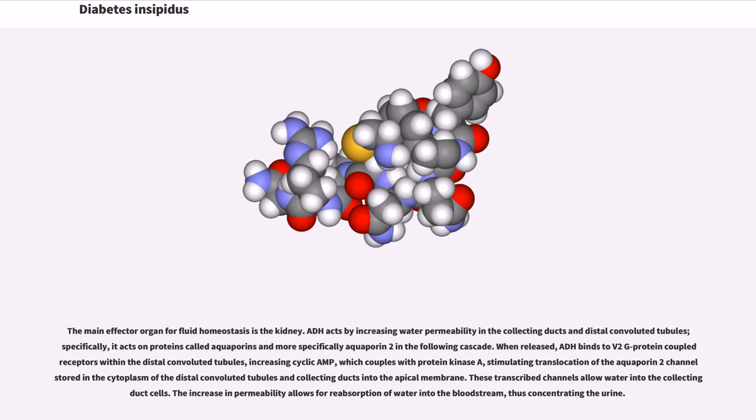The main effector organ for fluid homeostasis is the kidney. ADH acts by increasing water permeability in the collecting ducts and distal convoluted tubules, specifically, it acts on proteins called aquaporins and more specifically aquaporin-2 in the following cascade. When released, ADH binds to V2 G protein coupled receptors within the distal convoluted tubules, increasing cyclic AMP, which couples with protein kinase A, stimulating translocation of the aquaporin-2 channel stored in the cytoplasm of the distal convoluted tubules and collecting ducts into the apical membrane. These transcribed channels allow water into the collecting duct cells. The increase in permeability allows for reabsorption of water into the bloodstream, thus concentrating the urine.